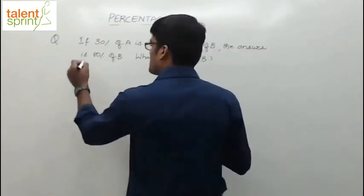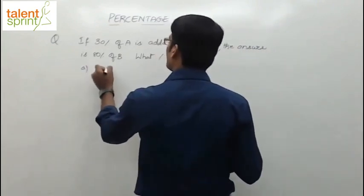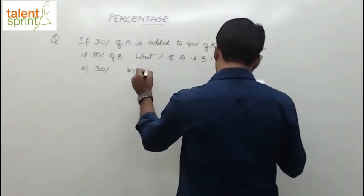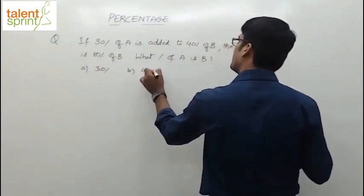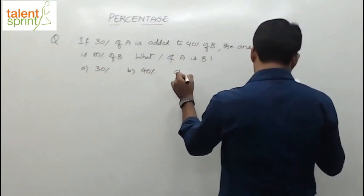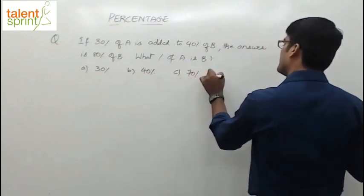Let's look at the options as well. Options are 30%, 40%, 70%, and the last one is 70%.